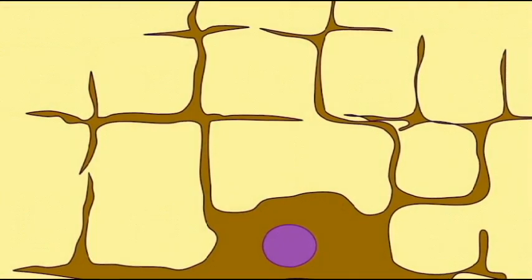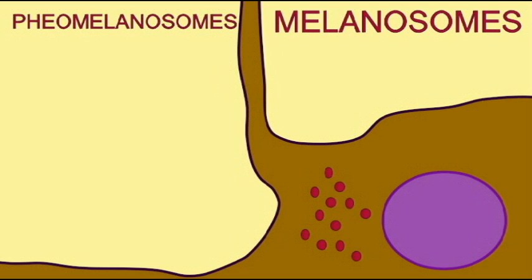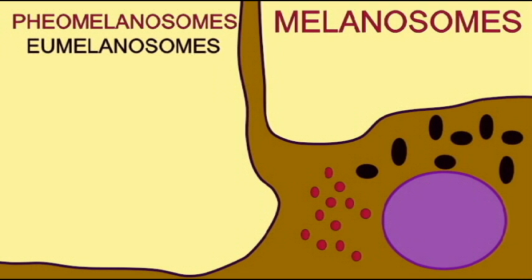These melanocytes produce the pigment melanin, which is then packaged into vesicles known as melanosomes. Now melanocytes can make different forms of melanin. A reddish form known as pheomelanin is packaged into pheomelanosomes, while the brown to black eumelanin is packaged into the larger, more oblong eumelanosomes.